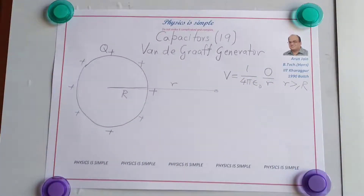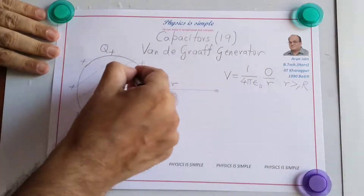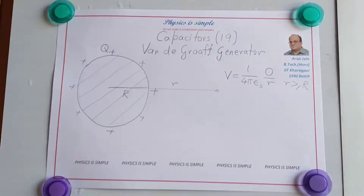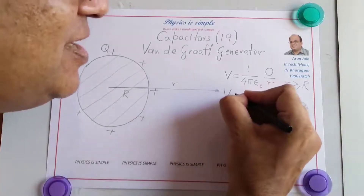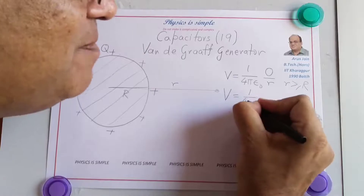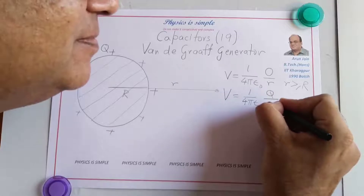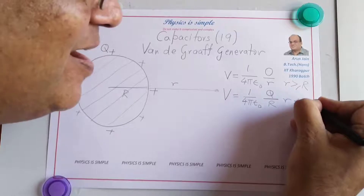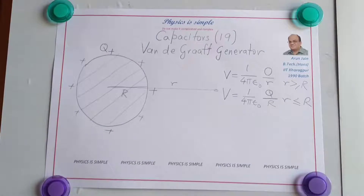But if you go inside, the entire space is an equipotential. The potential at every point inside will be equal to the potential at the surface, and therefore V = (1/4πε₀) × Q/R, when r ≤ R. Potential inside everywhere is the same.